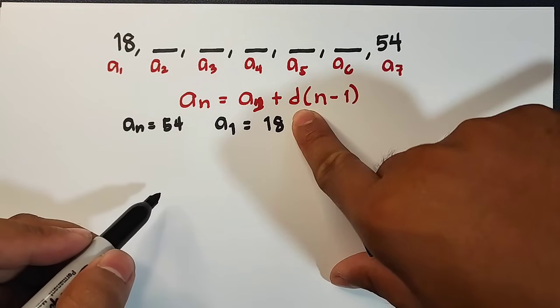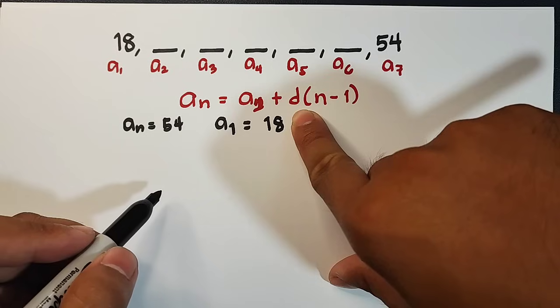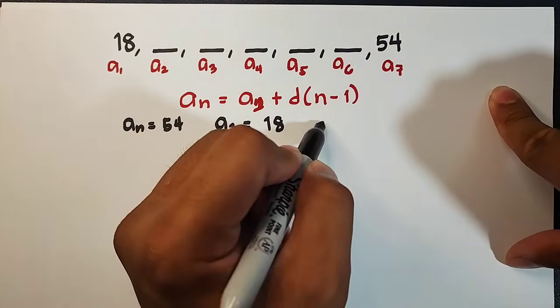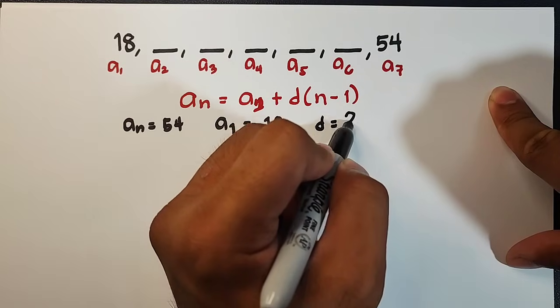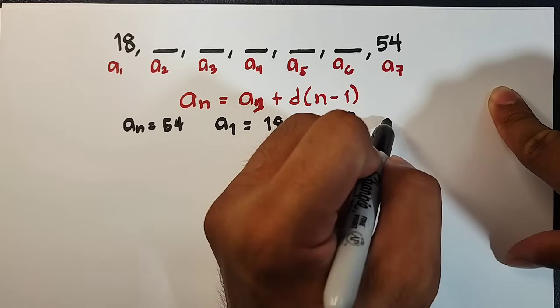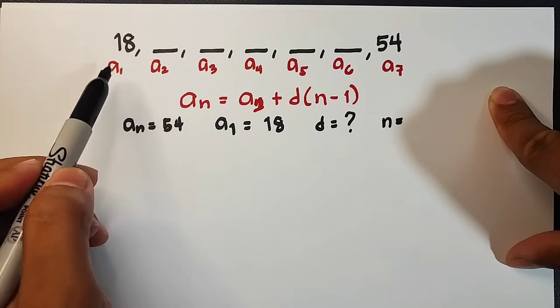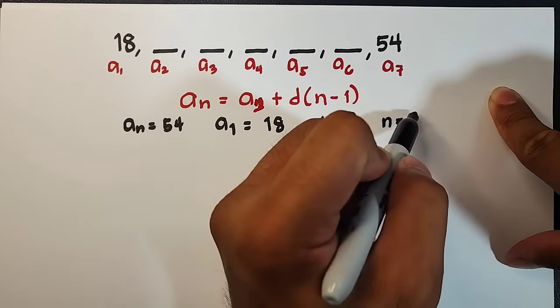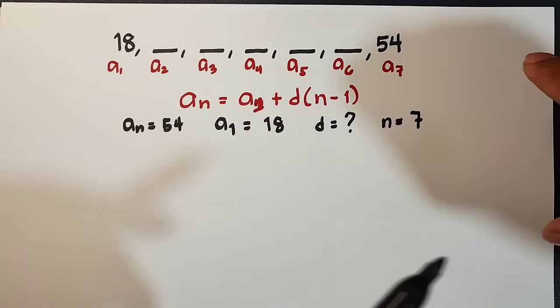And this one is letter d. We don't have yet the value of the common difference. So ang hahanapin natin mamaya is letter d or common difference. And for the value of n or the number of terms, simply count this one. 1, 2, 3, 4, 5, 6, and 7. So our n is equal to 7.